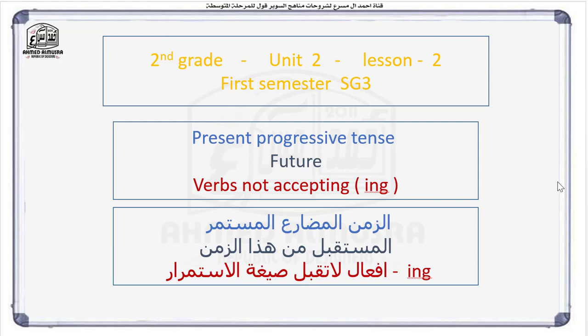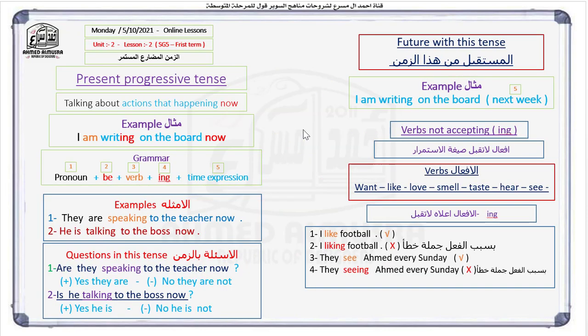In the name of Allah. I am back again with a new lesson for the second grade. We'll be talking about grammar for the semester, Super Goal 3. Today's topic is the Present Progressive Tense, alongside the future use and verbs not accepting the -ing. Let's move to the next slide and talk about the Present Progressive Tense.